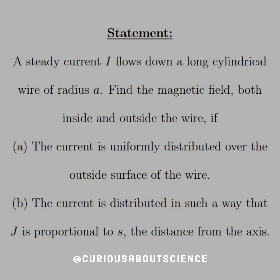And B, the current is distributed in such a way that J is proportional to S, where J is the volume current density and S is the distance from the axis.